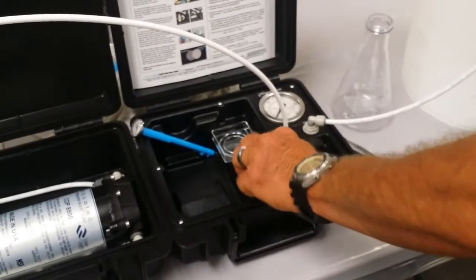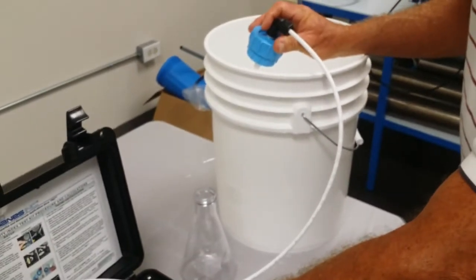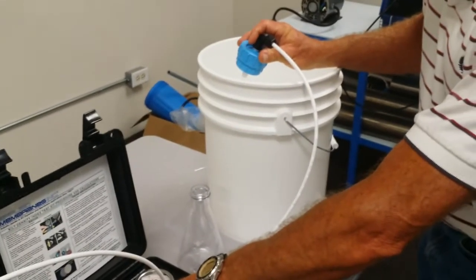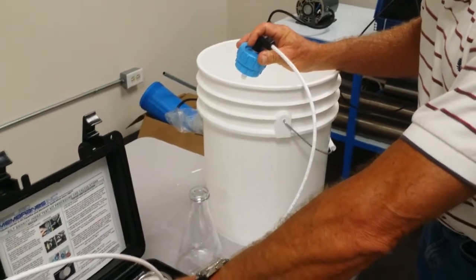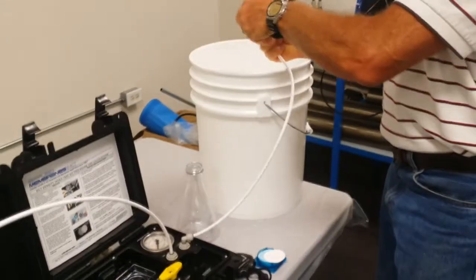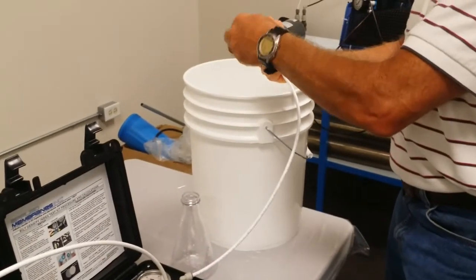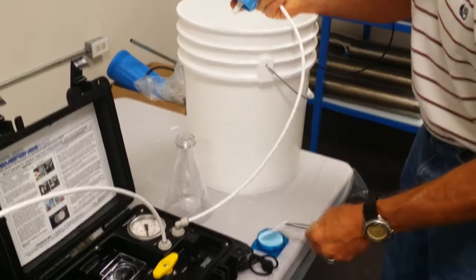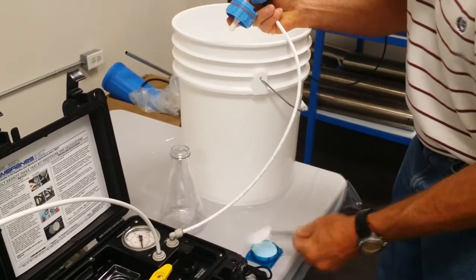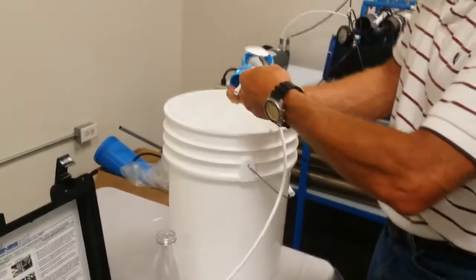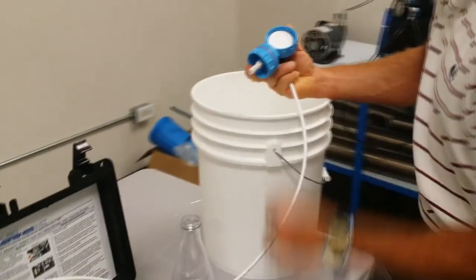First thing we want to do is bleed out any air from the system, that takes 5 or 10 seconds. That should get rid of any air in there. We'll take the filter holder apart, beat the tweezers and there we are. We have the filter pad in there.